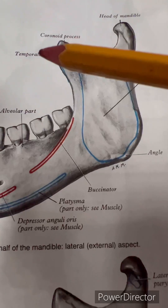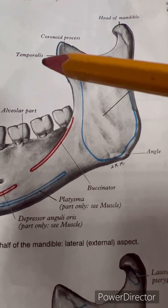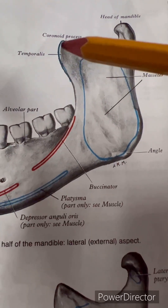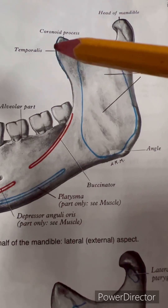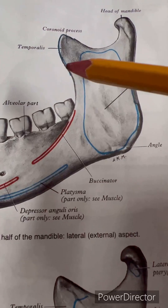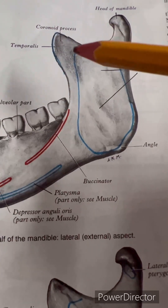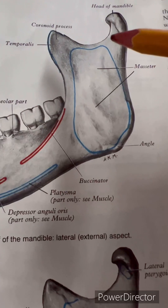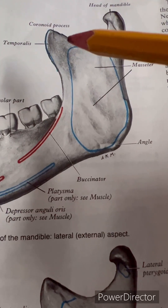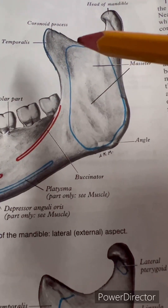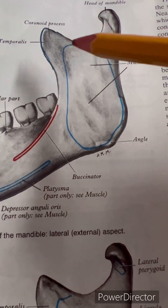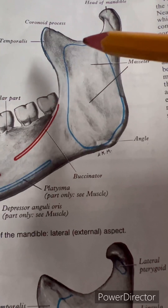The lowest fibers of the temporalis muscle descend beyond the coronoid process to the anterior border of the ramus. It is important to note that the mandibular incisure or notch, which is a concavity on the upper border of the ramus, transmits the masseteric nerves and vessels from the infratemporal fossa.